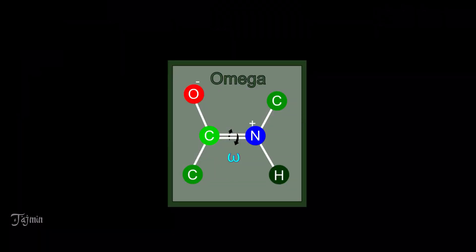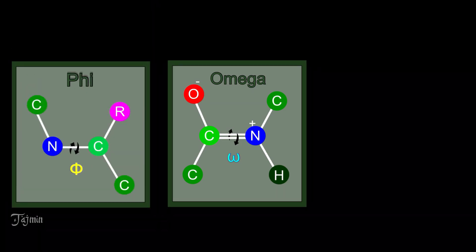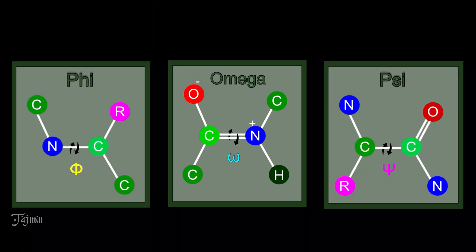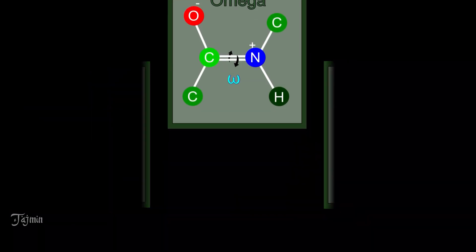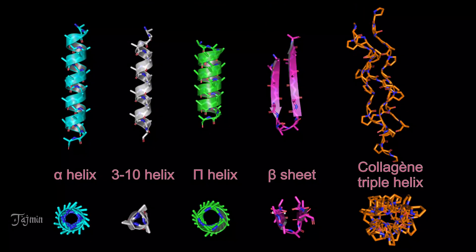Unlike omega, the dihedral angles phi and psi are not restricted to 180 degrees because they are the rotation angles of single bonds. And hence, they can freely rotate and facilitate protein molecules to attain different conformations.